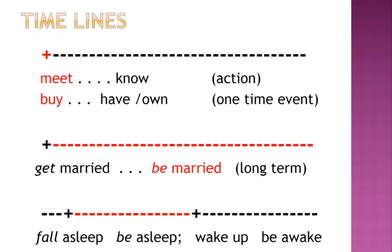Let's look at some timelines. In the first example, it's an action — meet or buy — referring to a one-time event. In the second example, it's referring to a status which occurs over a long term, for example, 'be married.' In the third example, it's referring to a status that may have occurred for a long time in the past — 'be asleep.' We'll talk about that one separately.